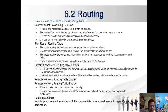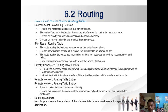Directly connected routing table entries use the codes C and L. C identifies a directly connected network, automatically created when the interface is configured with an IP address and activated. L identifies that this is a local interface — this is the IPv4 address of the interface on the router.